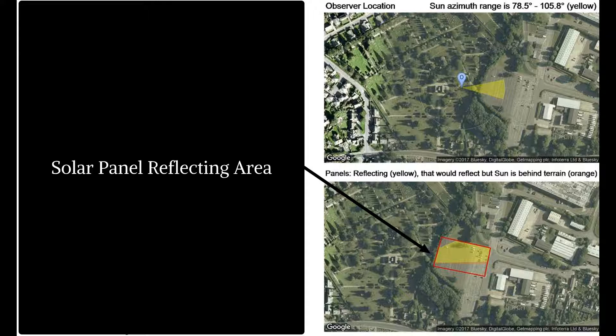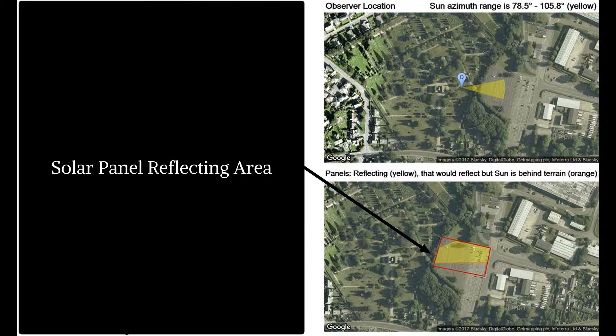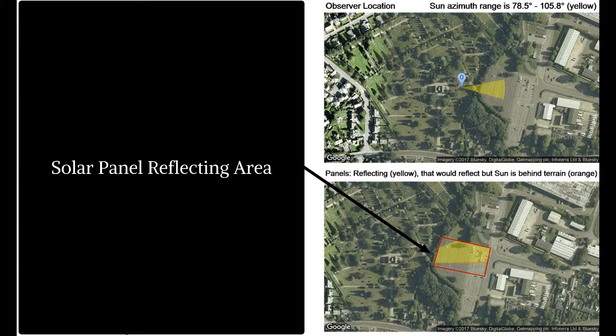The bottom right image shows the solar panels that could produce glint and glare effects at the relevant time towards the assessed receptor. This is shown as the yellow area. The small orange area to the south of the yellow shows the solar panels that would produce glint and glare effects were it not for terrain at the visible horizon obscuring the sun from view of the solar panels.